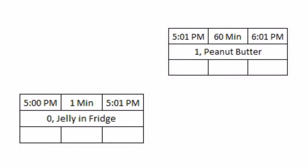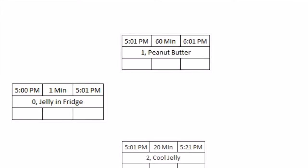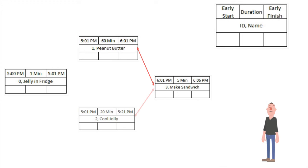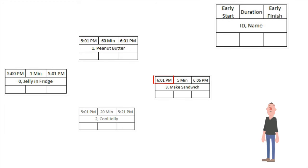Now let's look at picking up the peanut butter. We can start picking up the peanut butter at 5:01. It's going to take one hour to pick up, so 5:01 plus the duration gives us an early finish time of 6:01 p.m. Making our sandwich is tied to both our peanut butter and letting the jelly cool — we can't start making the sandwich until both of those are complete. So the earliest we can start making our sandwich is whichever of these activities finishes last. Getting the peanut butter finishes at 6:01 p.m., so our early start for making our sandwich is 6:01 p.m. Then it will take 5 minutes to make our sandwich, leaving us with an early finish date of 6:06 p.m.